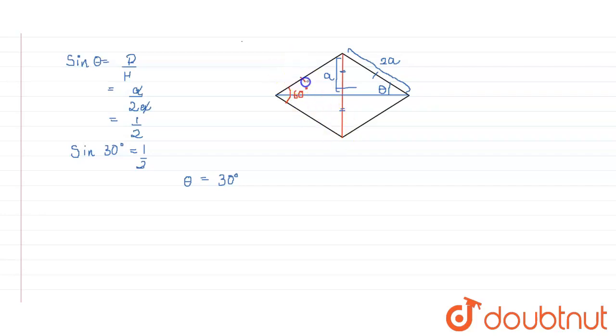And since this line and this line are parallel, this angle plus this angle should be 180 degrees. So let this angle be alpha. Alpha plus 60 degrees equals 180 degrees.